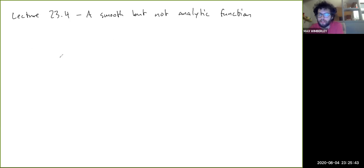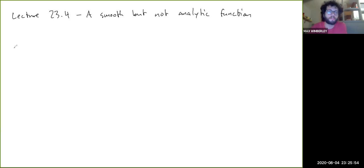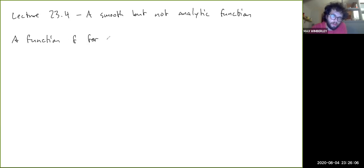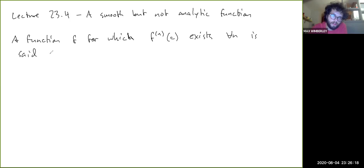In this video, we're going to look at an example of a function which is quote-unquote smooth but not analytic. Some terminology here, which is a healthy thing for anyone to learn in their math education: a function F for which F^(n)(c) exists for all n is said to be smooth at c.